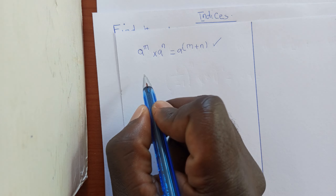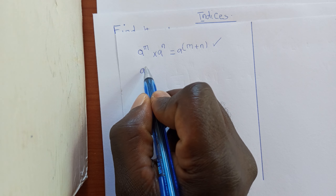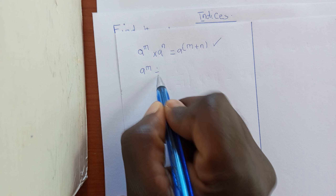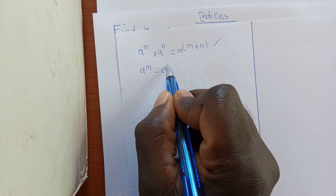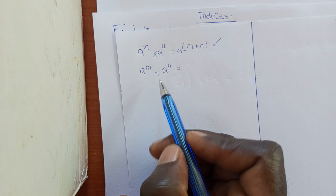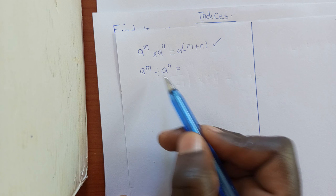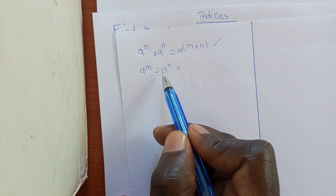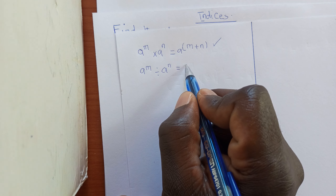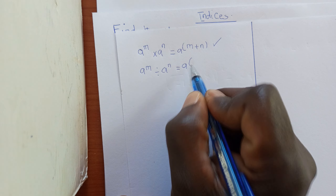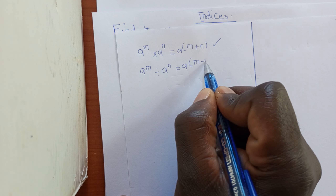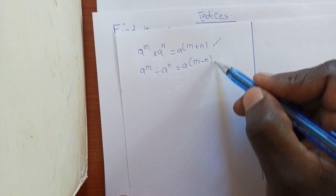The second law: if we have A raised to M divided by A raised to N, when powers are in division, the division changes into subtraction of the powers. So this equals A raised to M minus N.